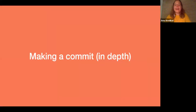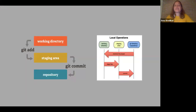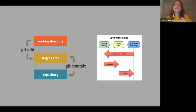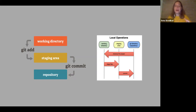Now that we've gone over that, let's go over making a commit in depth. When we first start learning Git, we usually come across diagrams like these. Whereas they're a good starting point, I think they can be misleading. Throughout this presentation, I'm going to be building up a new mental model and offering a new diagram that you can use to think about how Git works.